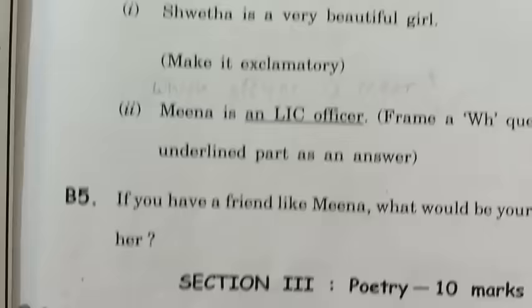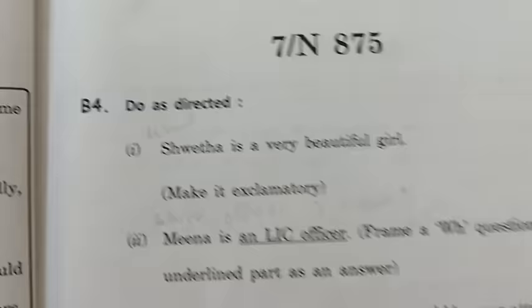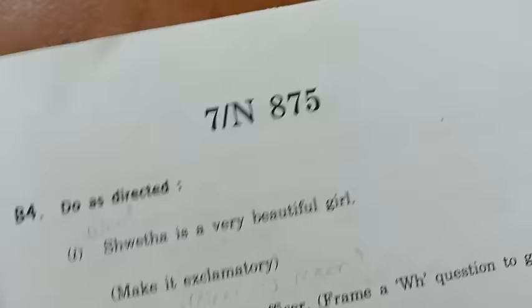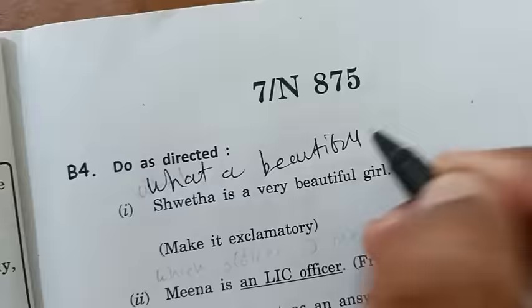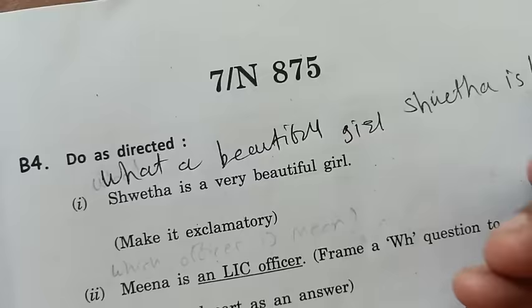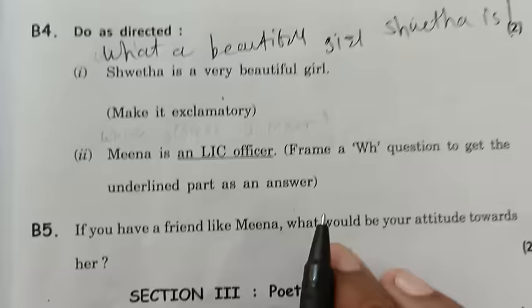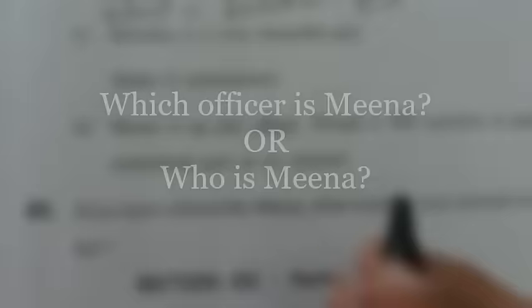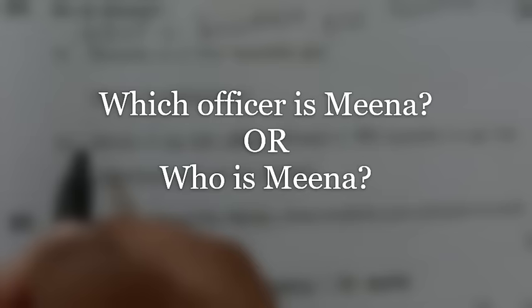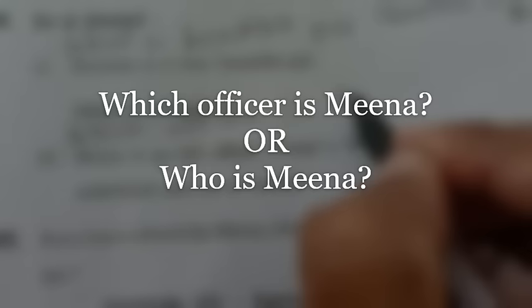In 'do as directed': 'Sweta is a very beautiful girl' — we make this an exclamatory sentence: 'What a beautiful girl Shreta is!' Then 'Mina is an LC officer' — we have to make a WH question, so: 'Which officer is Mina?' Put the question mark — this is the WH question.